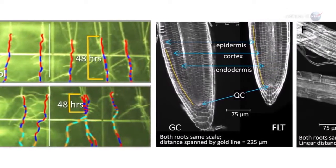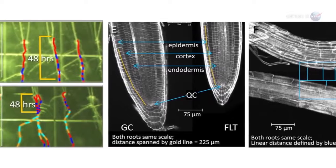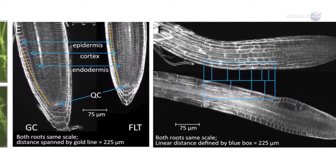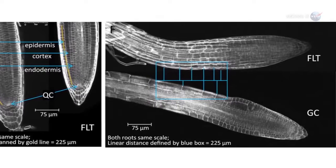We expected to find auxin in the gravity-sensing cells at the tip of the roots. Instead, it showed up in the hypocotyls, the stem-like region between the roots and leaves, she says.